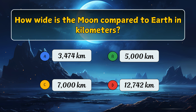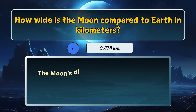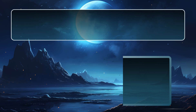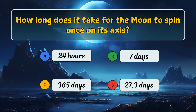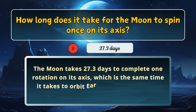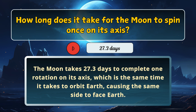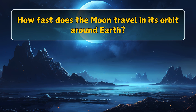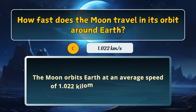How wide is the moon compared to Earth in kilometers? How long does it take for the moon to spin once on its axis? Here is the answer: 1.022 kilometers per second.